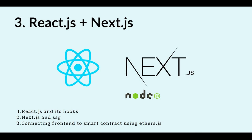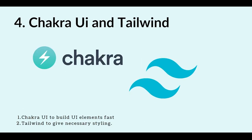We will also see how there are some pre-built templates like Scaffold-ETH and plugins like wagmi.js, which will help us build web3 applications very easily. We will then learn about Chakra UI and Tailwind to build our UI elements — to build our website front-end quickly. We'll be using Tailwind to give the necessary styling to our application.